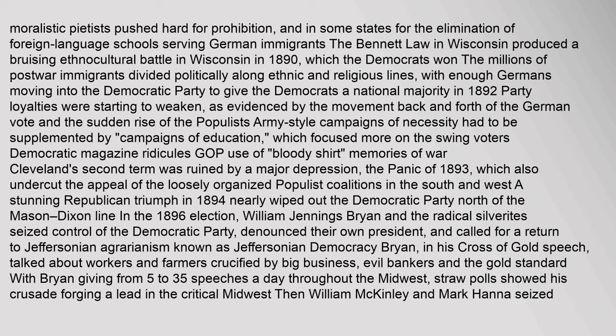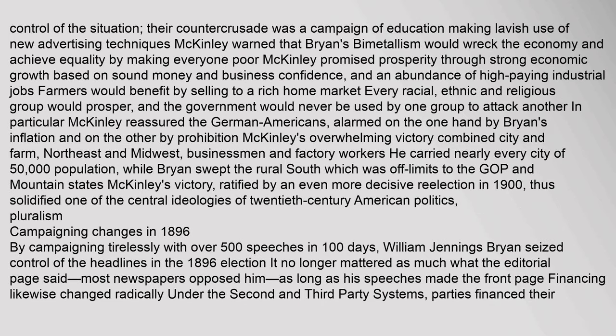A stunning Republican triumph in 1894 nearly wiped out the Democratic Party north of the Mason-Dixon line. In the 1896 election, William Jennings Bryan and the Radical Silverites seized control of the Democratic Party, denounced their own president, and called for a return to Jeffersonian agrarianism. Bryan, in his Cross of Gold speech, talked about workers and farmers crucified by big business, evil bankers, and the gold standard. With Bryan giving 5 to 35 speeches a day throughout the Midwest, straw polls showed his crusade forging a lead in the critical Midwest. Then William McKinley and Mark Hanna seized control of the situation.